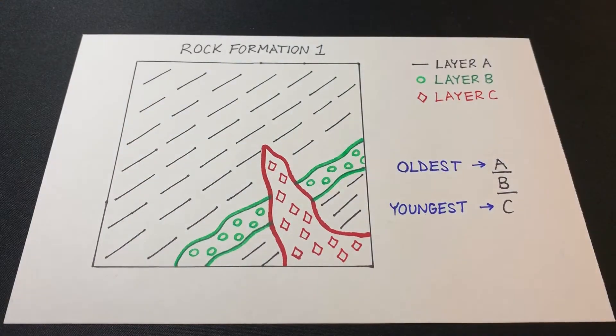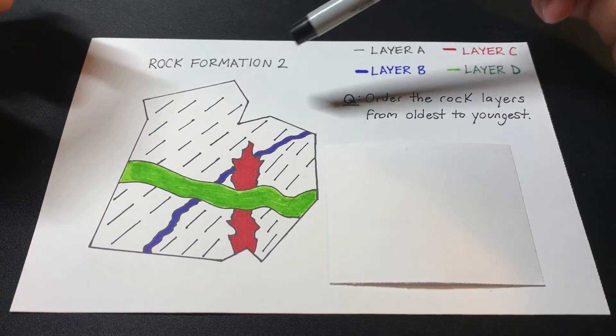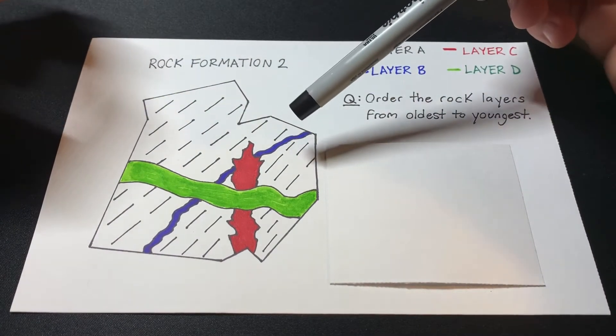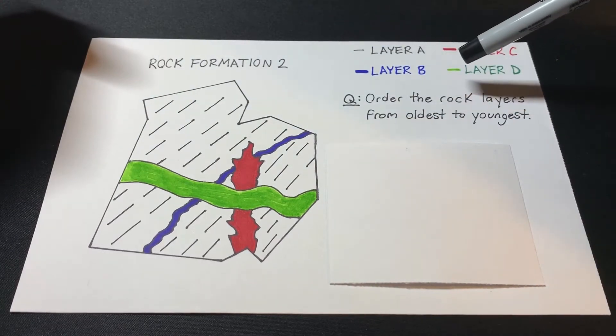So let's move on to a little bit more complex figure. So here I have drawn out rock formation two. It's a bit of a more complex figure, but I have the key indicating the four different rock layers based on color.